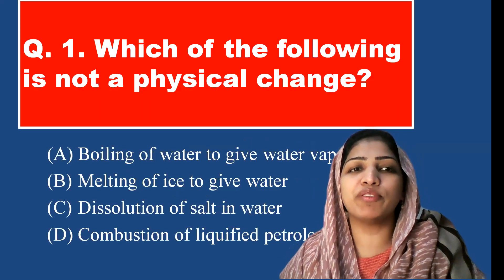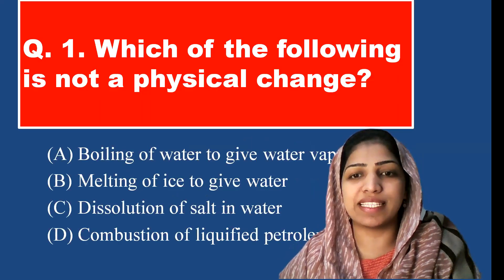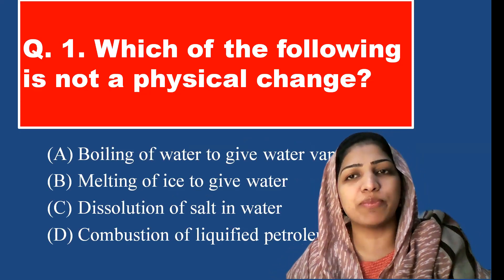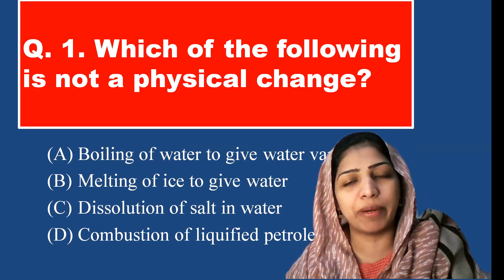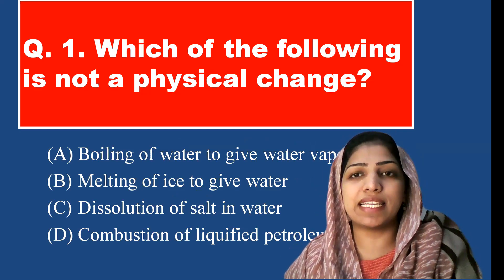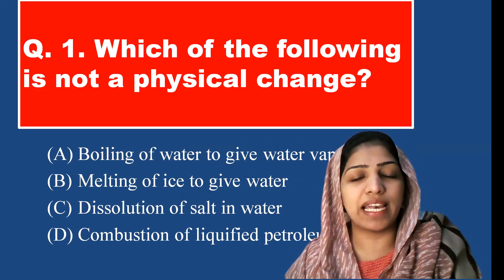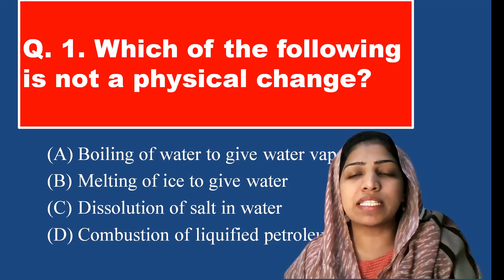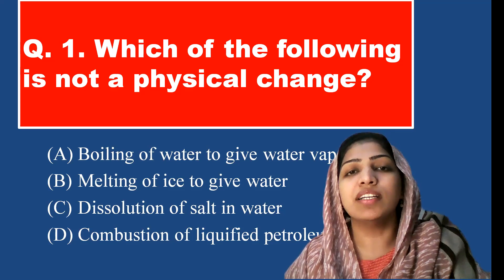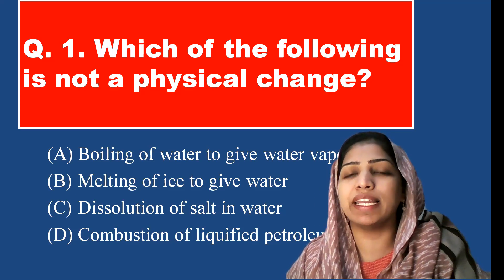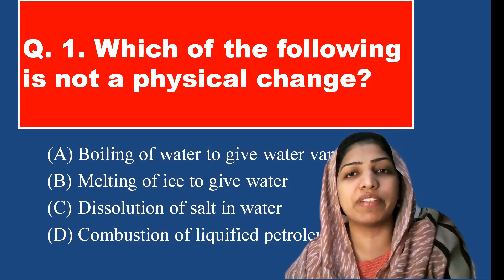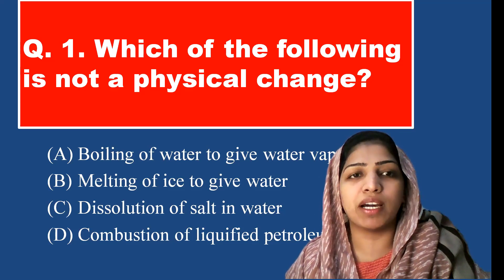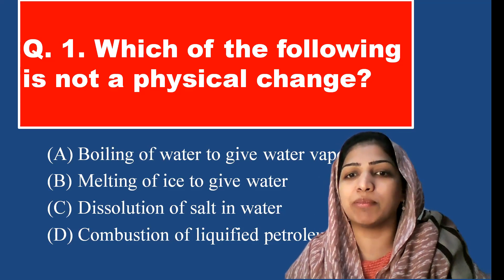Which of the following is not a physical change? There are four options. Physical change and chemical change — we are going to study in the first class. With chemical change, there are different products. It's not a physical change; it's a chemical change.